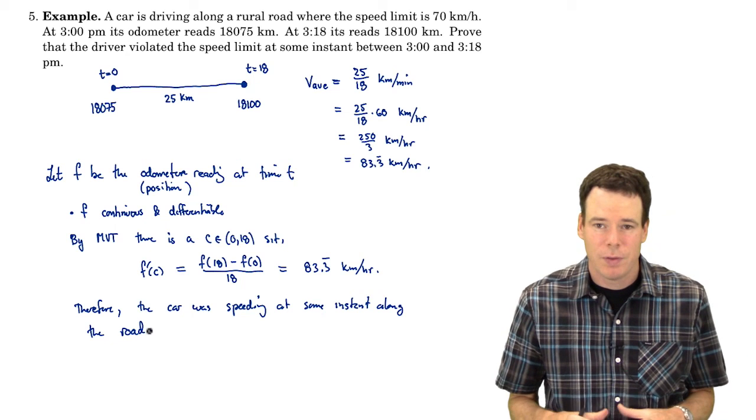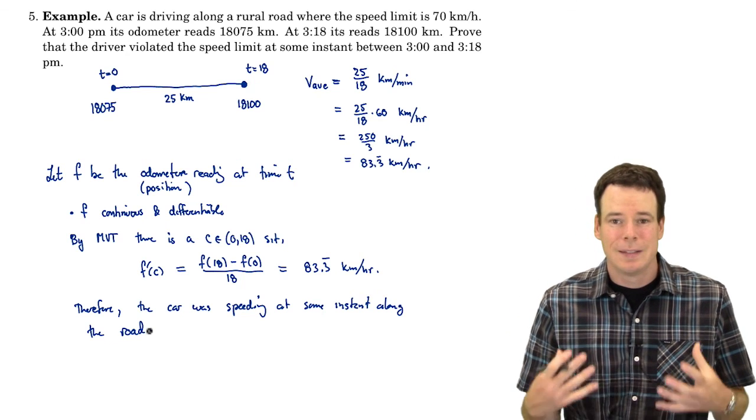So there's an example of how we can use the mean value theorem to prove the existence of a point without actually knowing exactly where that point occurred.